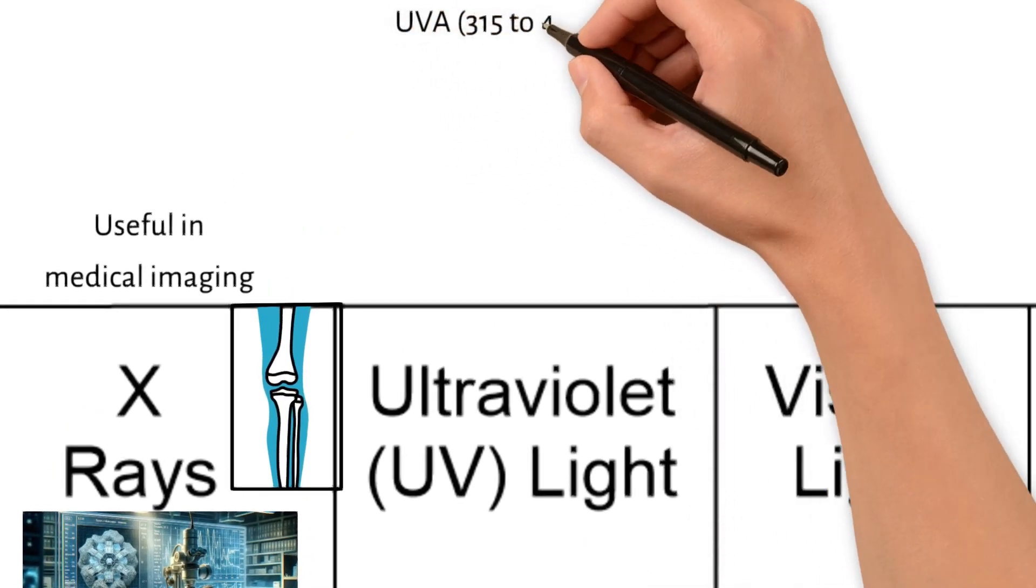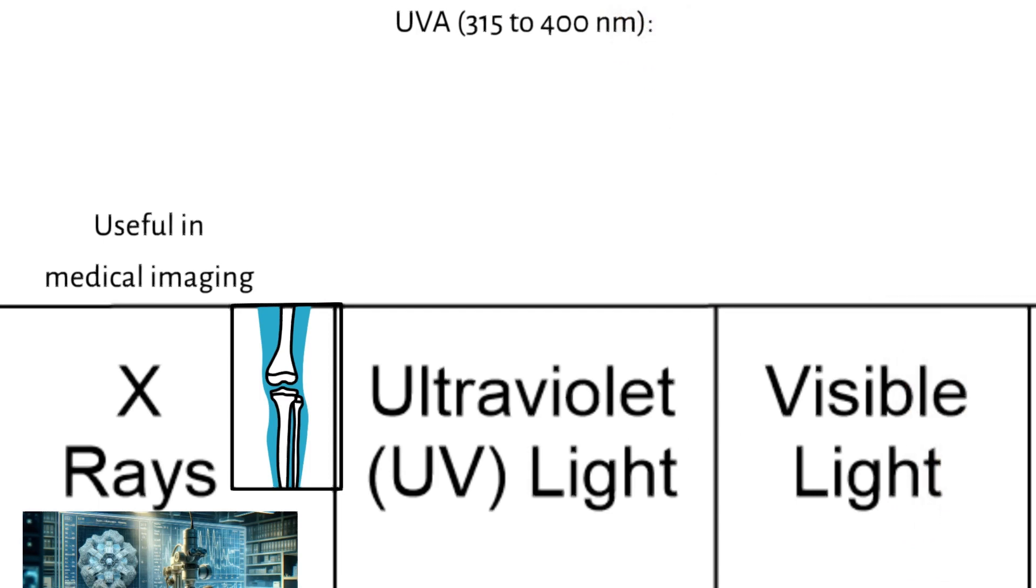UVA is 315 to 400 nanometers. It is the least energetic and most long-wave light, which reaches the Earth's surface and is responsible for skin aging and long-term skin damage.